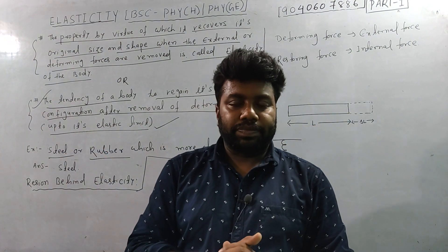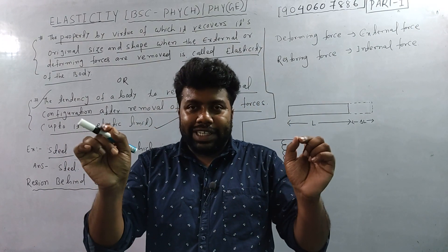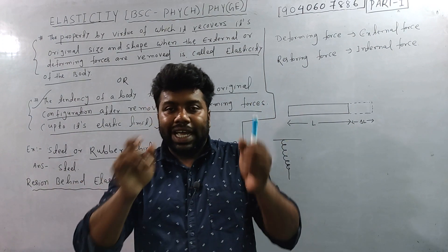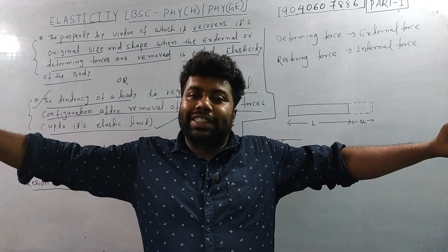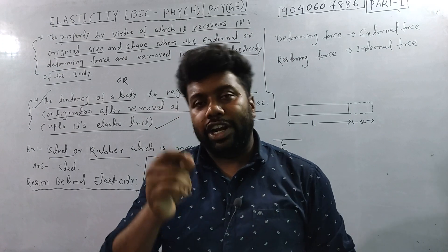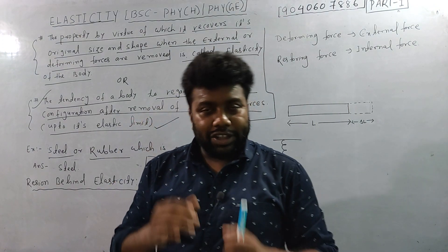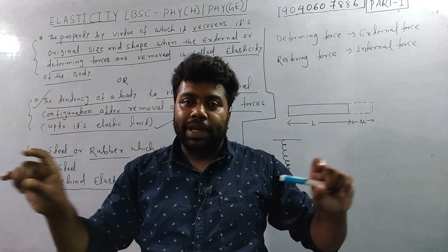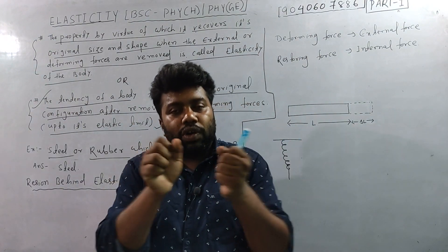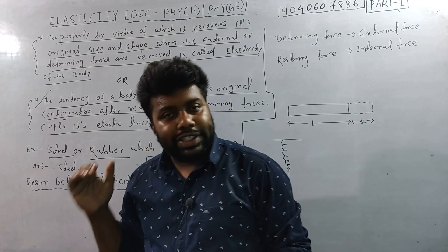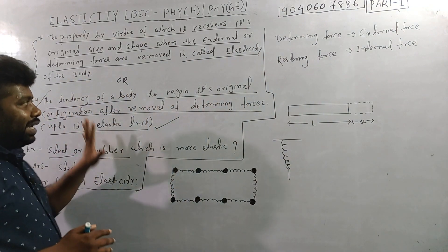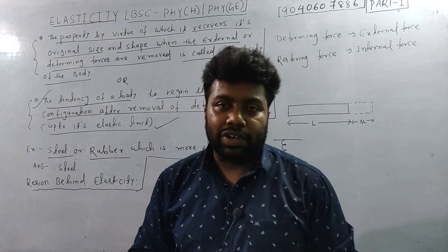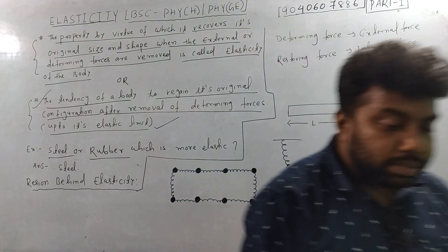For example, we have to stretch rubber. The rubber is considered more elastic because it stretches and returns. A metal like steel, however, has different elasticity characteristics. Solids in general have elasticity as a compound property — this is the basis of the elasticity topic in solid mechanics.